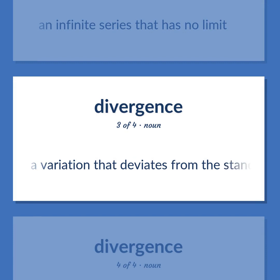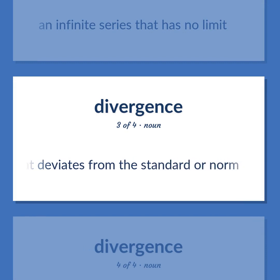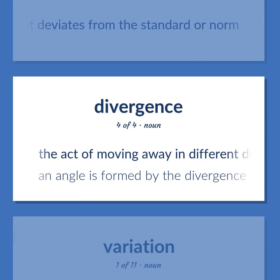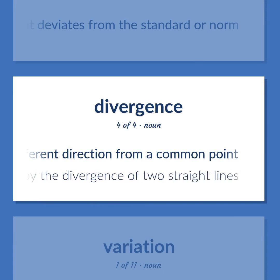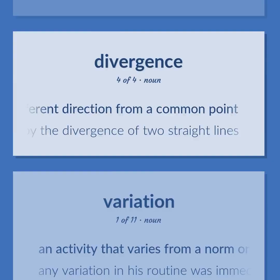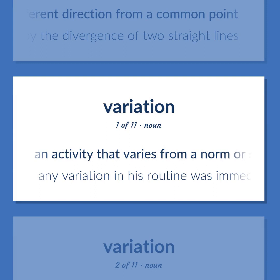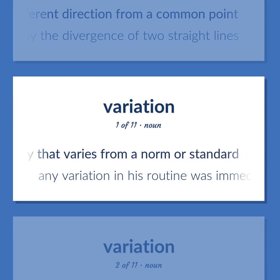A variation that deviates from the standard or norm. The act of moving away in different directions from a common point. An angle is formed by the divergence of two straight lines. An activity that varies from a norm or standard — any variation in his routine was immediately reported.